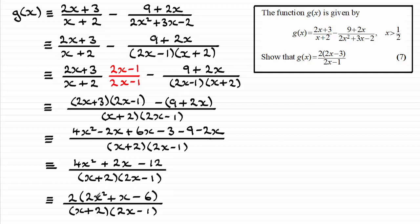And then this quadratic factor here, that factorises further. A couple of brackets here. So if I do that, you should get 2 times 2x minus 3 times x plus 2.